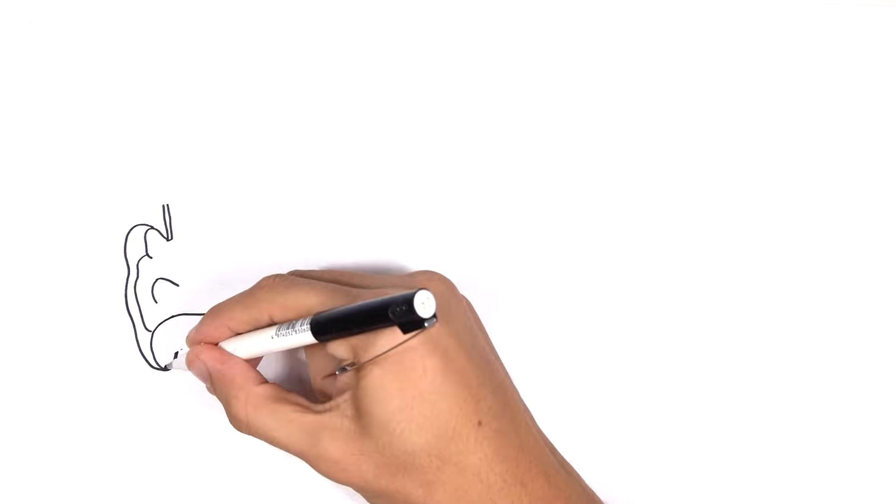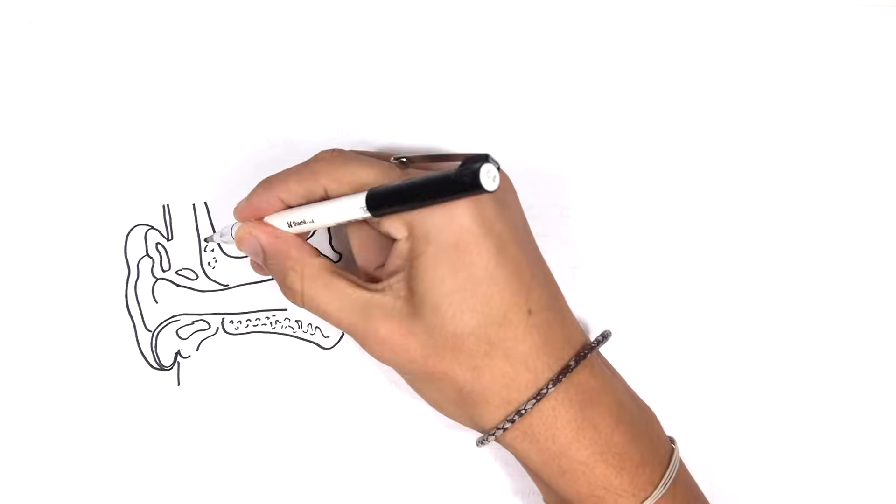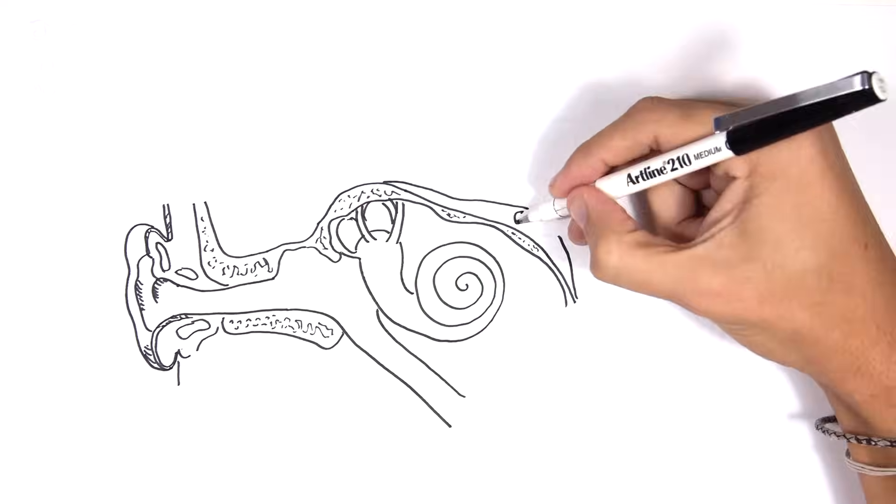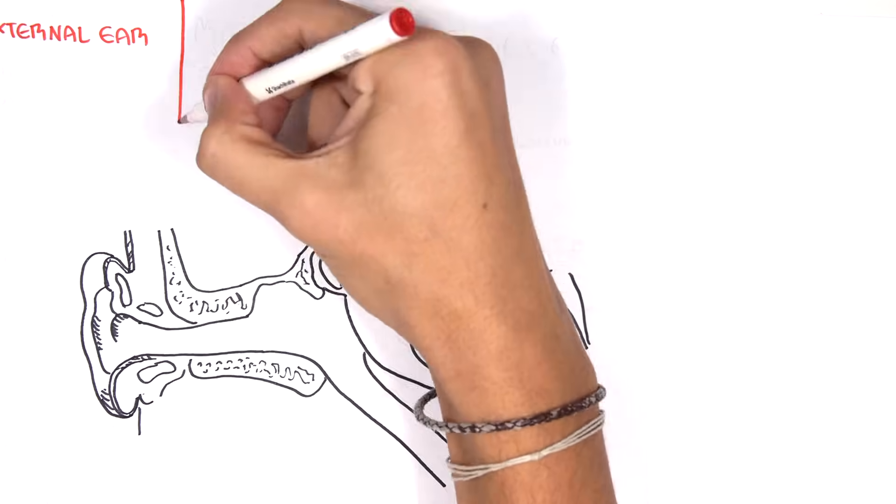In this video we will look at the anatomy of the ear. So the ear in general can be divided into three sections. The external ear which goes to the eardrum.